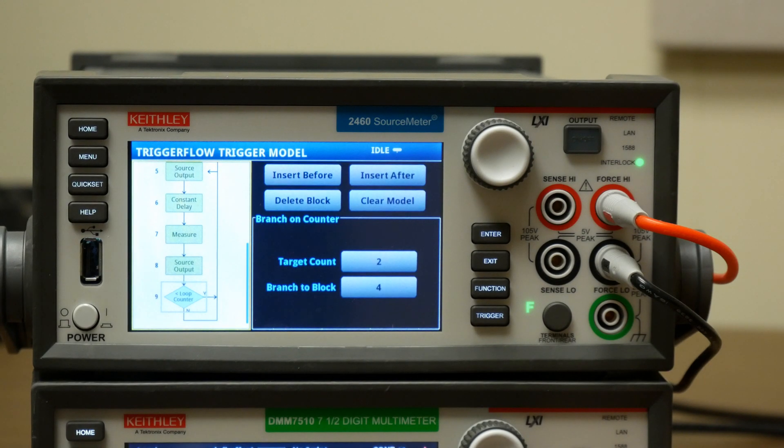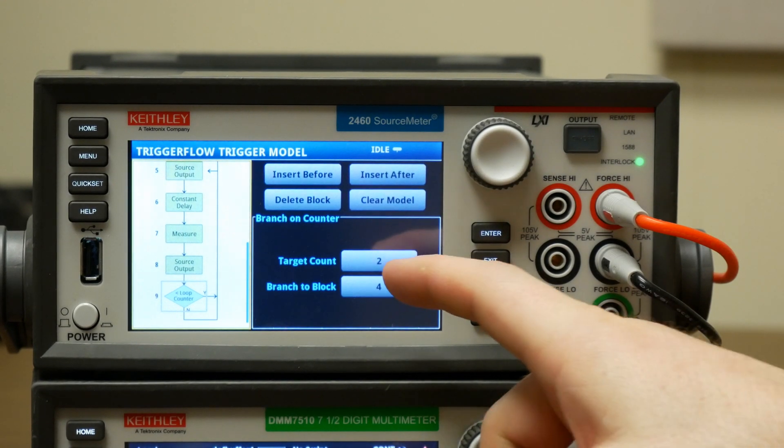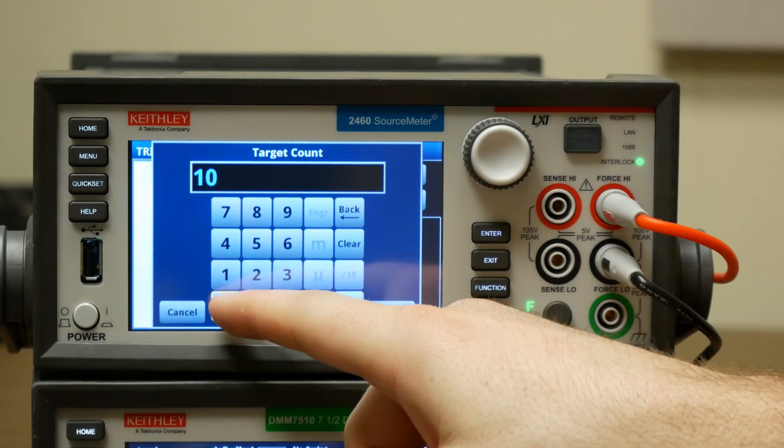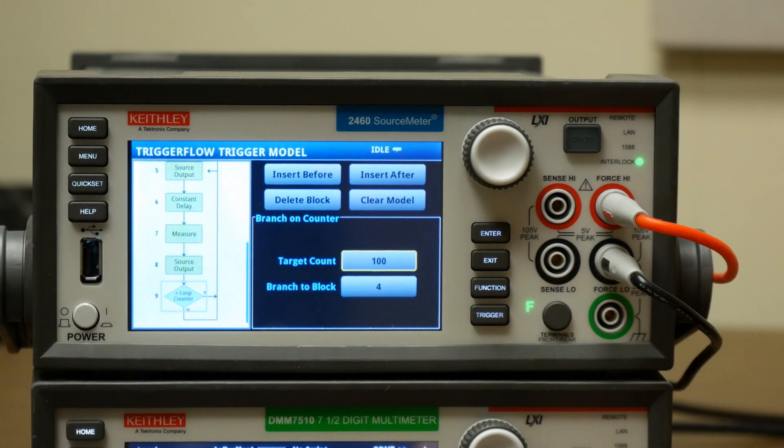we can, if we want to, for example, loop this 50 times, we can make that 100. And now it'll loop through this configuration list 50 times.